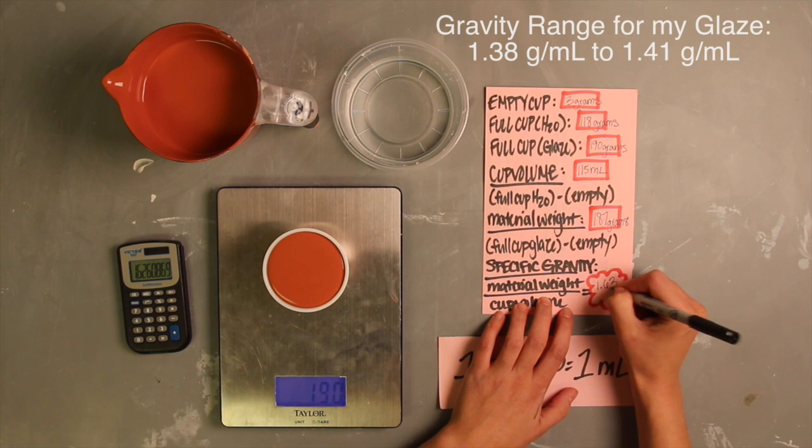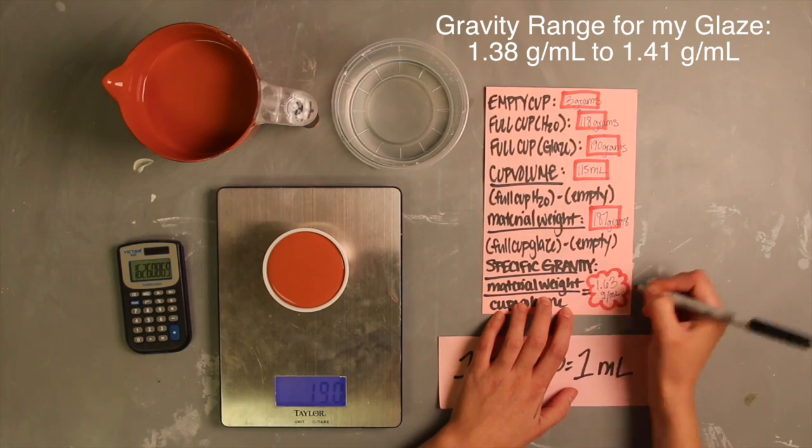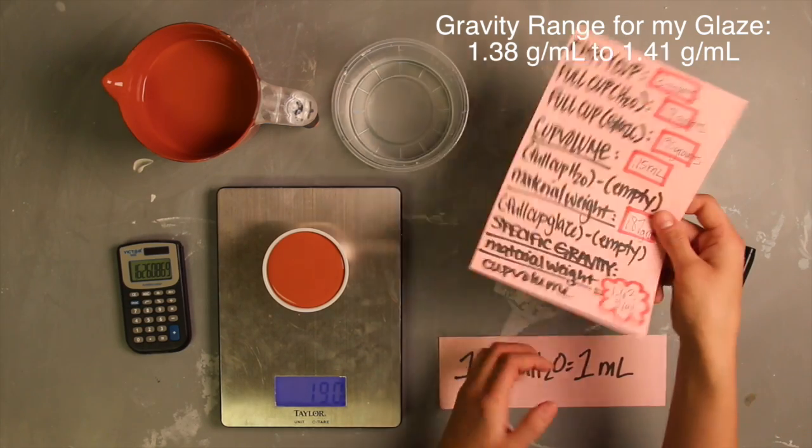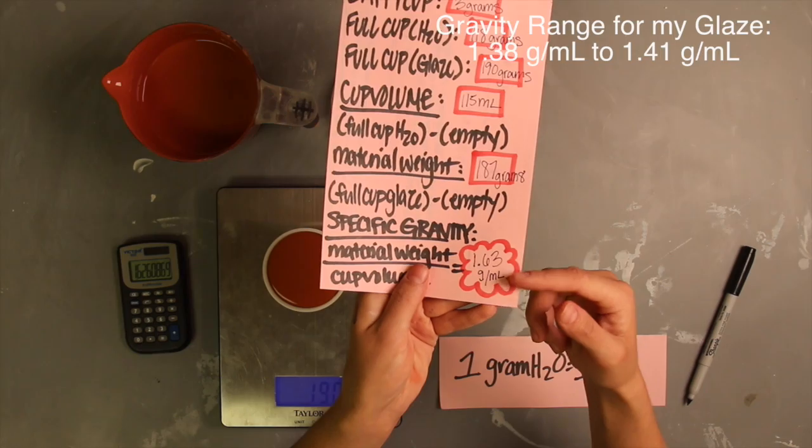Knowing that my glaze's range of specific gravity lies between 1.38 and 1.41, I know that there is too much glaze material in my glaze and that I should add a little bit of water and remeasure until it is correct.